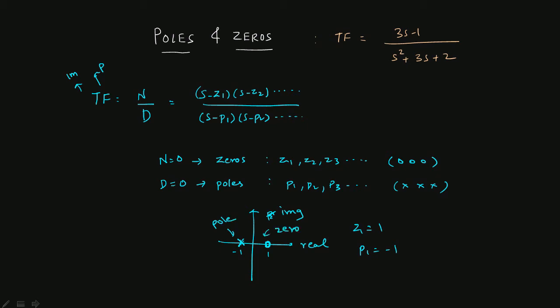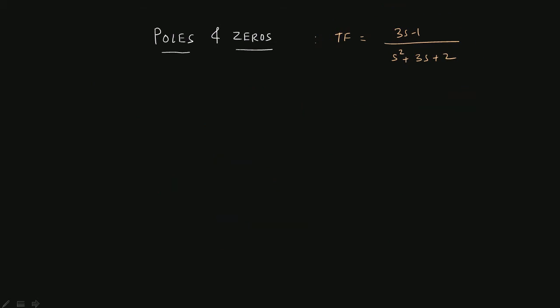That was the basic explanation of the transfer function pole-zero concept. First, represent the transfer function in factored form, then find the zeros and poles, and then plot them. Let's look at an example — you can pause the video and try to solve it yourself.